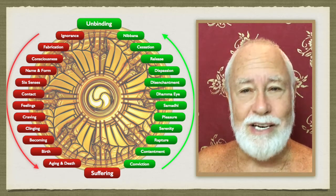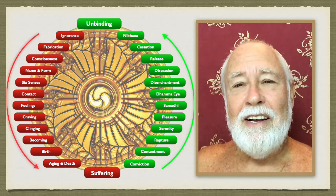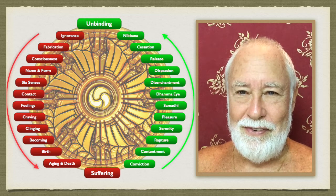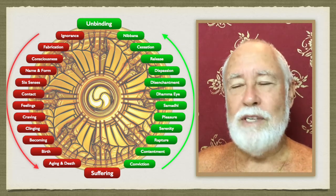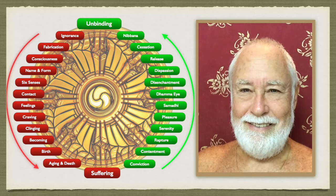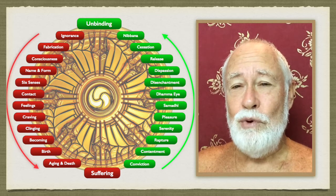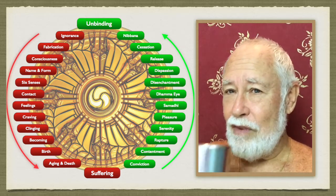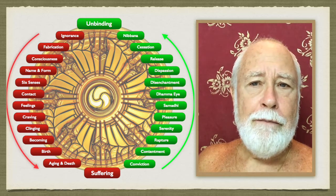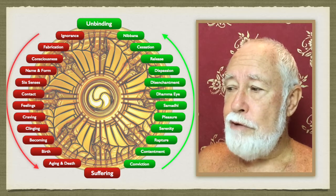That leads to fabrication. We all fabricate, and what's the main thing we fabricate? A self. I and mine. I guess I'm going to have to do a video on the Mula Pariyaya Sutta as well, because the Mula Pariyaya Sutta describes in detail this step of fabricating the self.